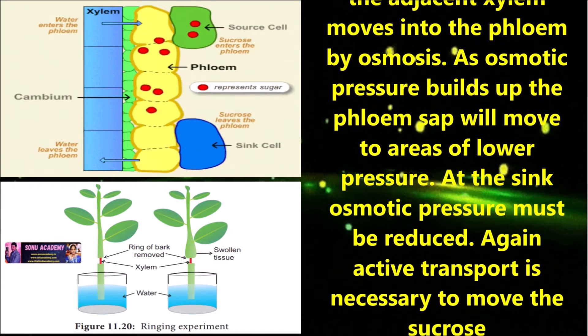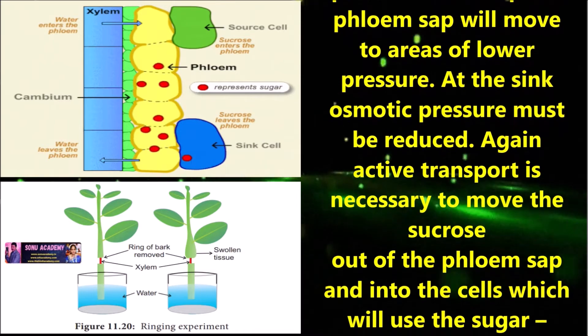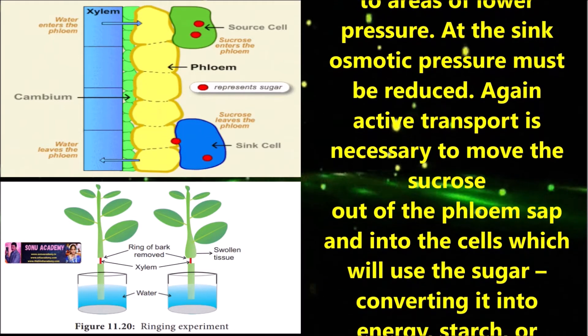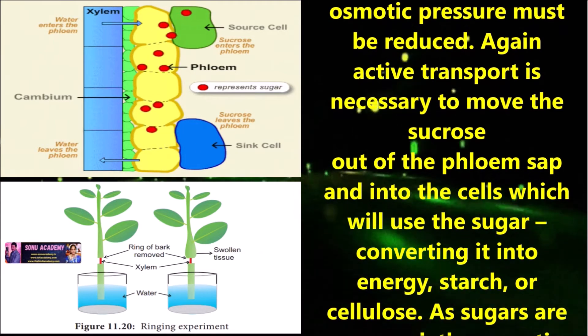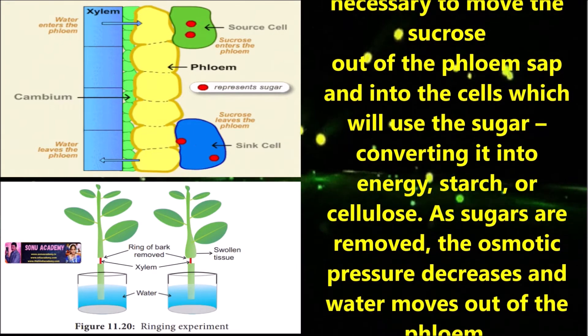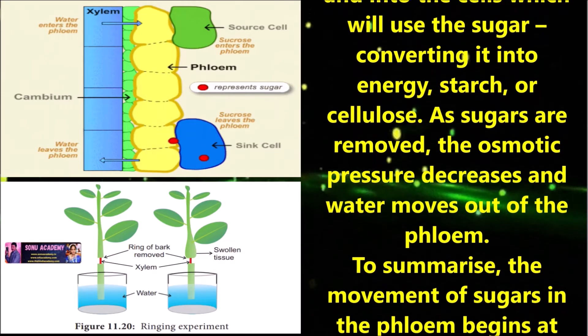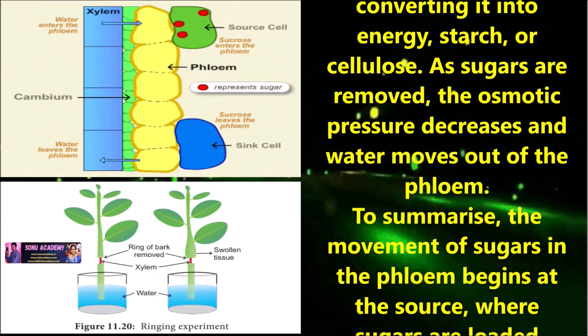At the sink, osmotic pressure must be reduced. Again, active transport is necessary to move the sucrose out of the phloem sap and into the cells which will use the sugar, converting it into energy, starch or cellulose. As sugars are removed, the osmotic pressure decreases and water moves out of the phloem.